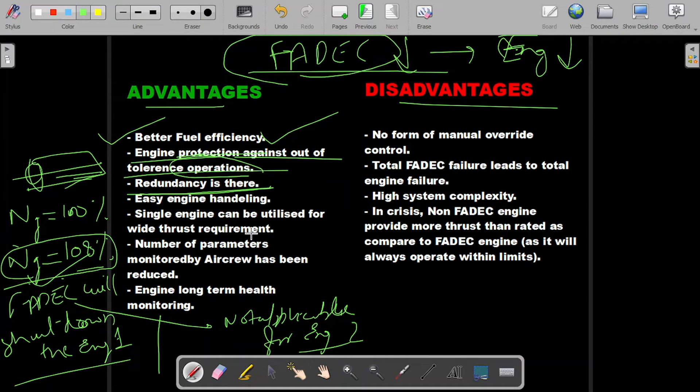If one FADEC fails, the other FADEC takes over. Easy engine handling means now crew doesn't have to ensure the thrust value, temperature, pressure, because they know there is an electronic control unit controlling the engine's parameters. They just have to fly the aircraft without checking all these parameters. Single engine can be utilized for wide thrust requirement. Number of parameters monitored by aircrew has been reduced.